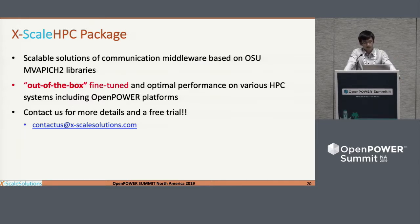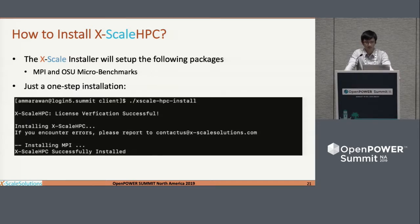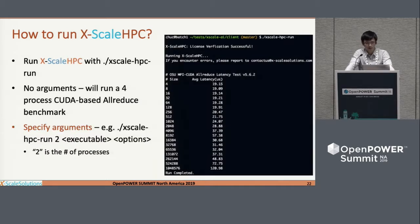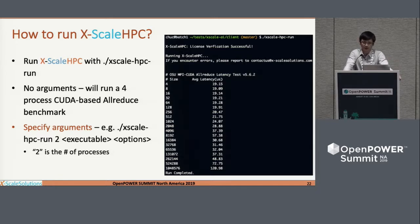We're also working on other platforms like x86. If you're interested, contact us and we can work to test it on your system. We have a free trial. To give you a quick look at how it looks: we provide very simple installation — just one command to install. It installs the MPI library and also benchmarks. To run it, also one command. If you're familiar with MPI run commands, it's exactly the same pattern — you just launch your job and you can run on thousands of GPUs. By default, we run all the defaults for some deep learning workload, but you can run any kind of application. It gives you already tuned performance.